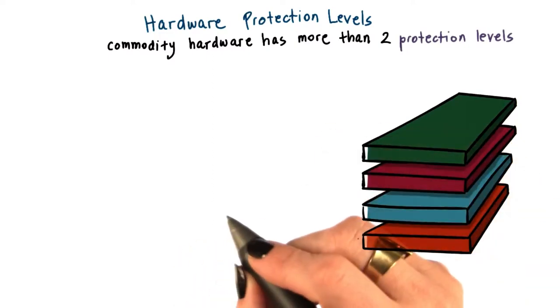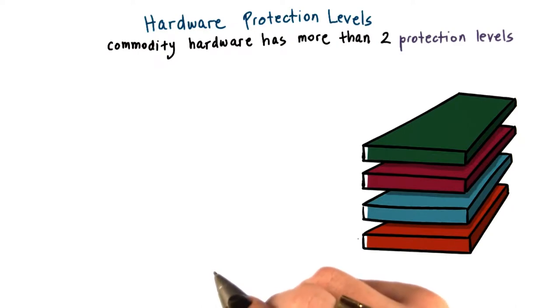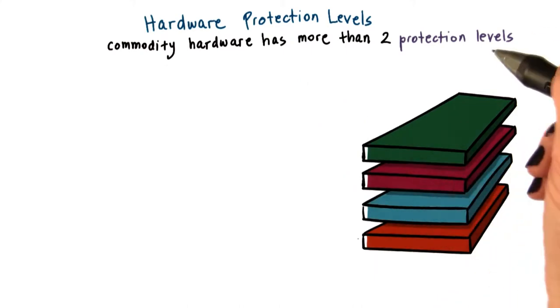When thinking about how to address the virtualization requirements that we just mentioned in the previous quiz, it is fortunate to observe that commodity hardware actually has more than two protection levels.